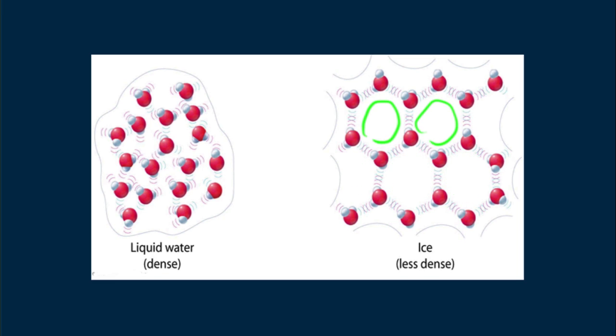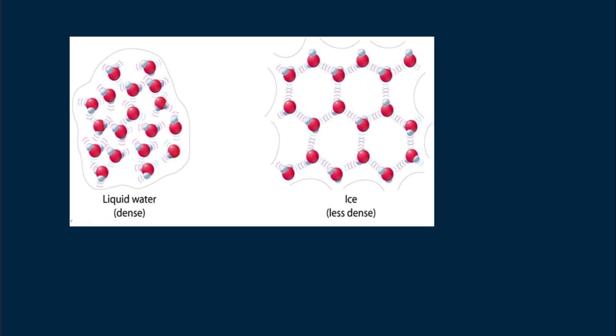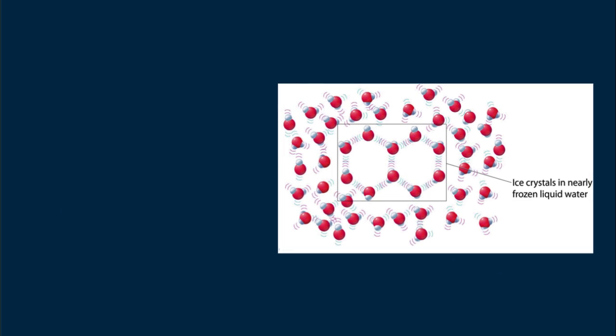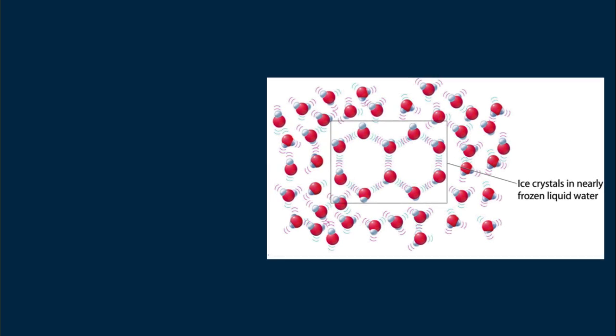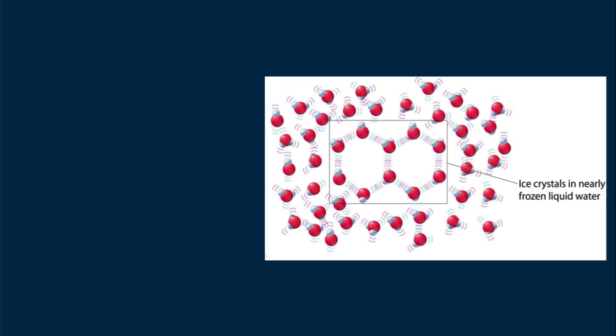When ice melts, not all the open structured crystals collapse. Some microscopic crystals remain in the ice water mixture, making up a microscopic slush that slightly bloats the water, increasing its volume.